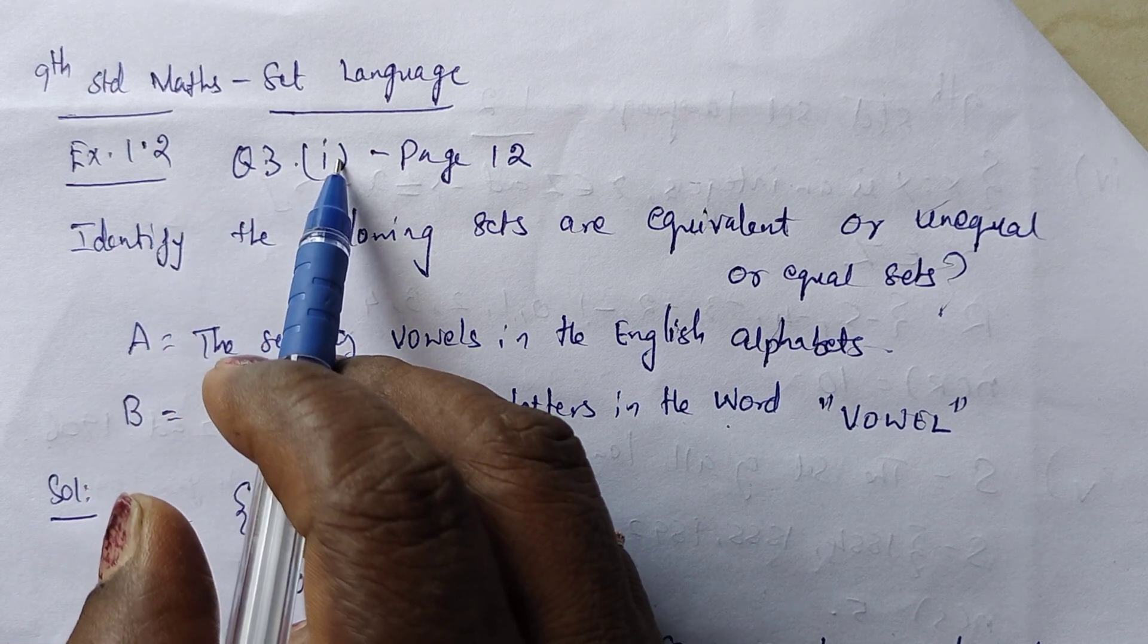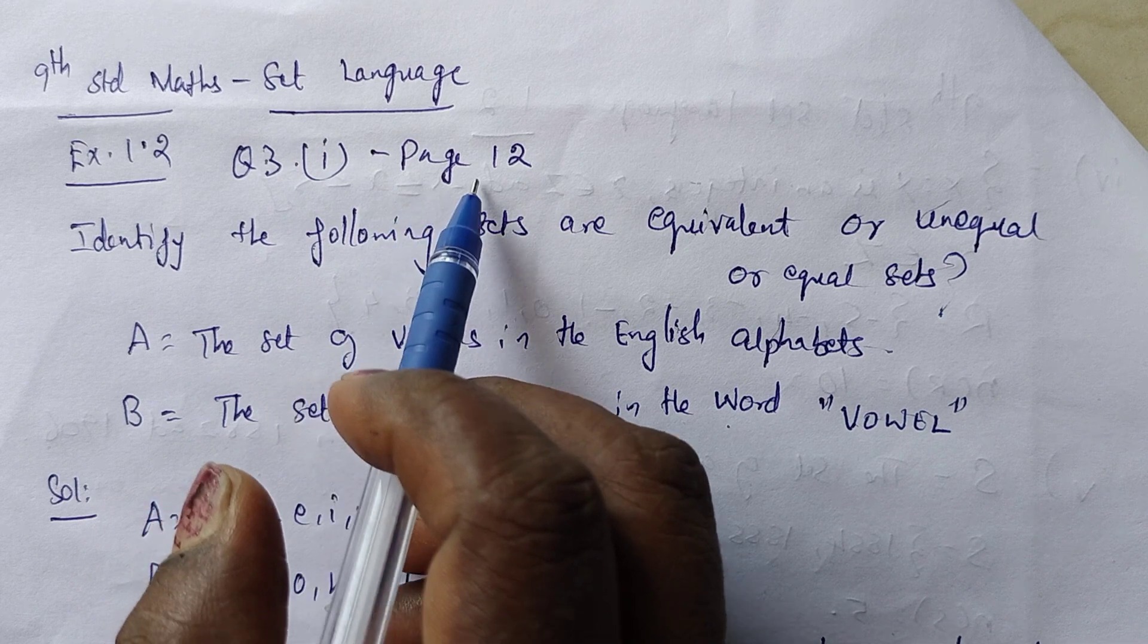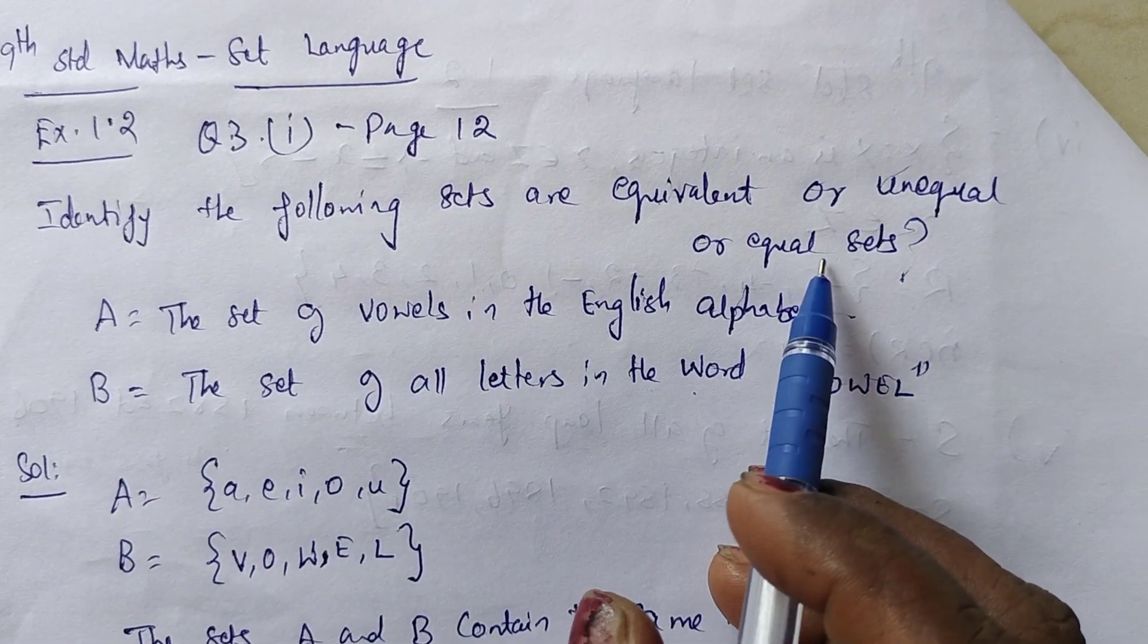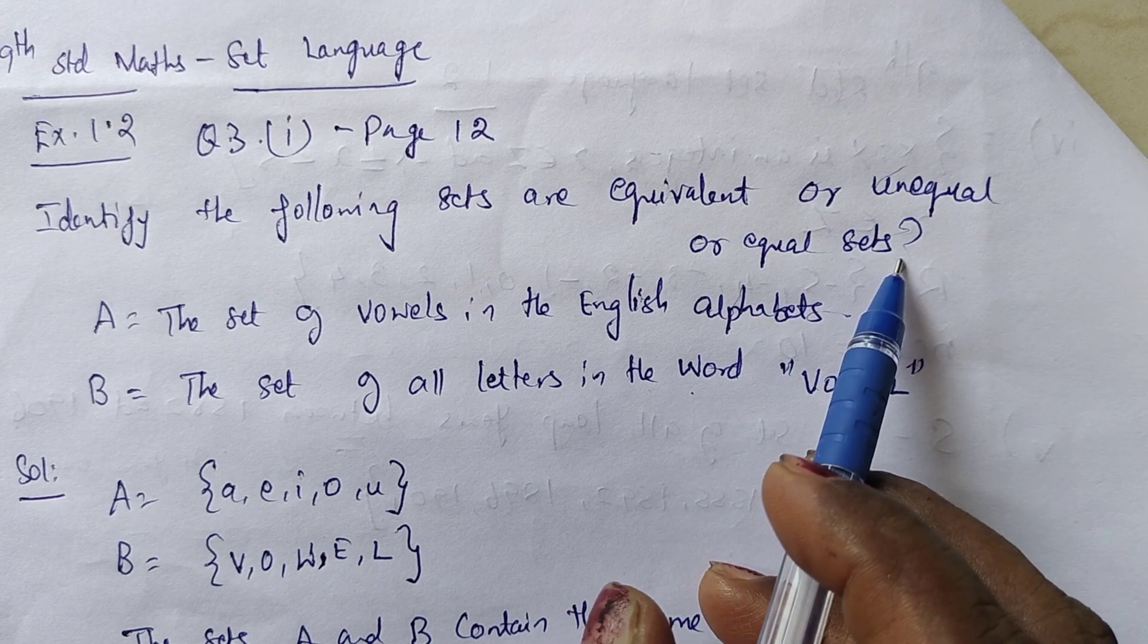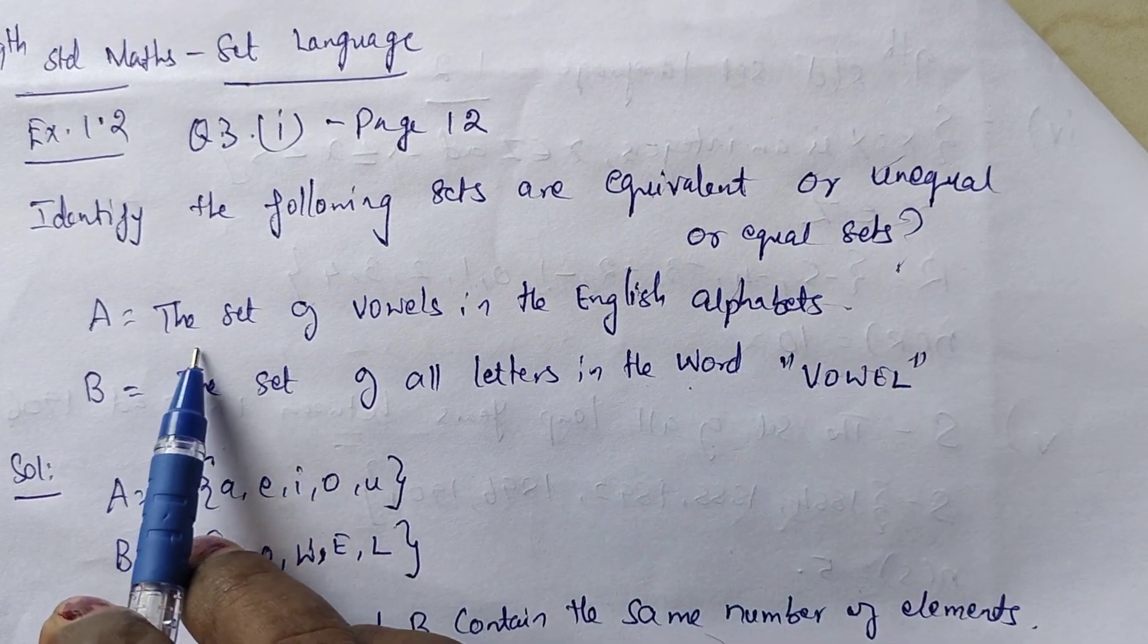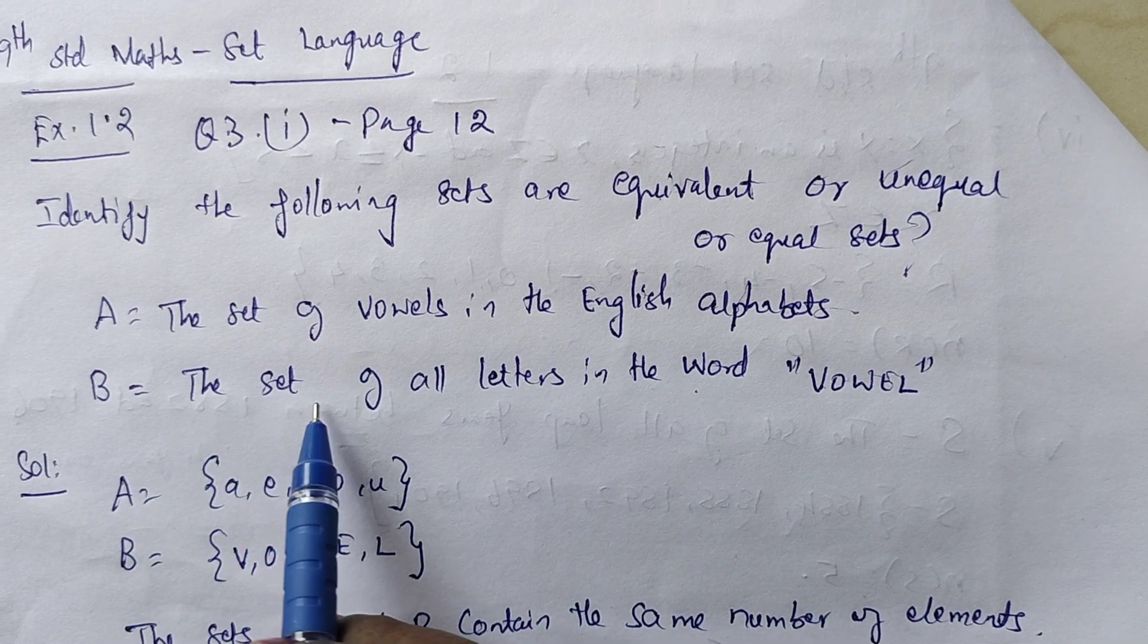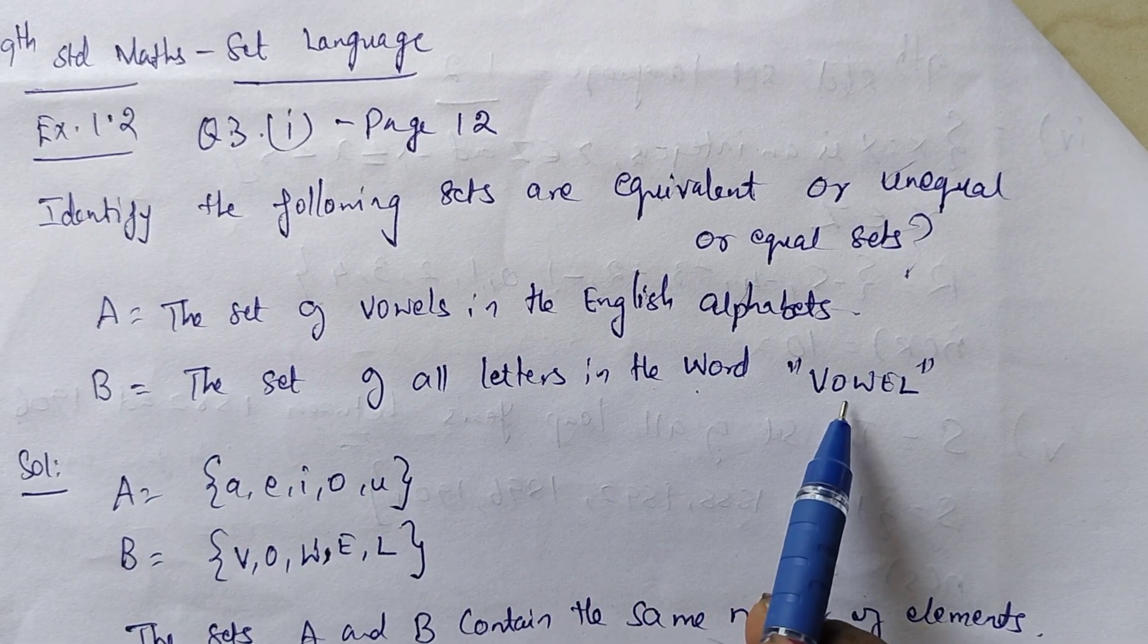Question Number 3, Page Number 12. Identify if the following sets are equivalent or unequal or equal sets. A equals the set of vowels in the English alphabets, and B equals the set of all letters in the word 'vowel'.